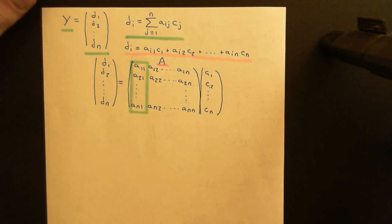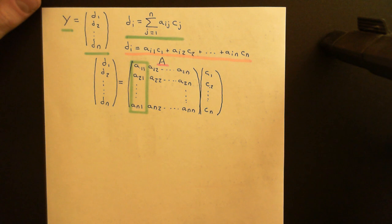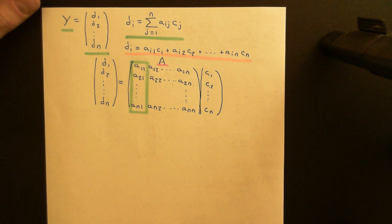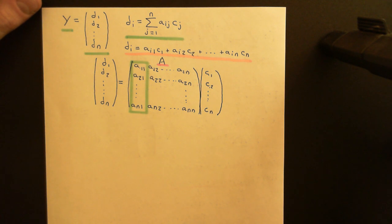Welcome back to this next video in which we are discussing linear operators. In the previous video, what we saw is that if we have a linear operator which is acting on a finite dimensional vector space and sending it onto itself, then we can always represent that linear operator by a matrix.